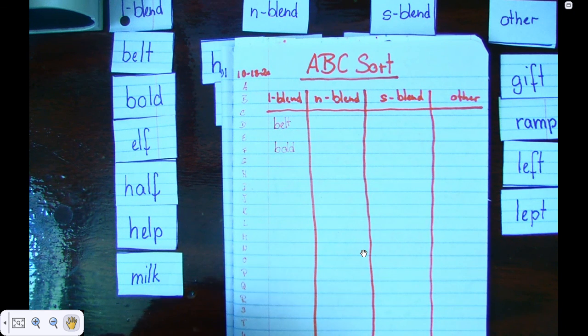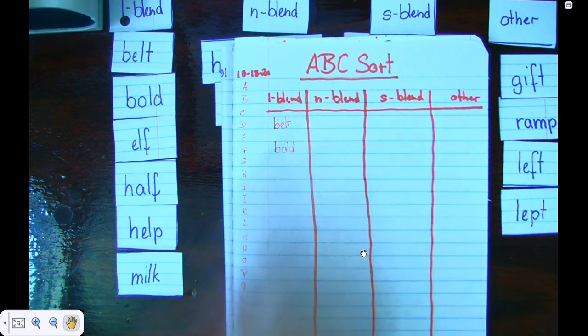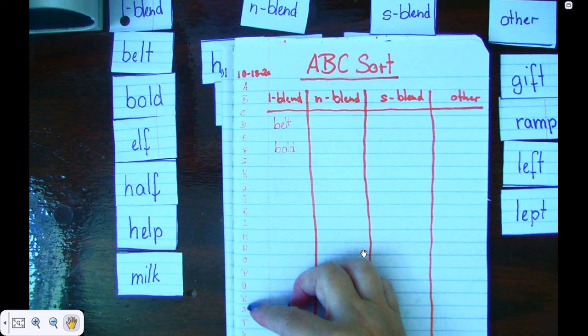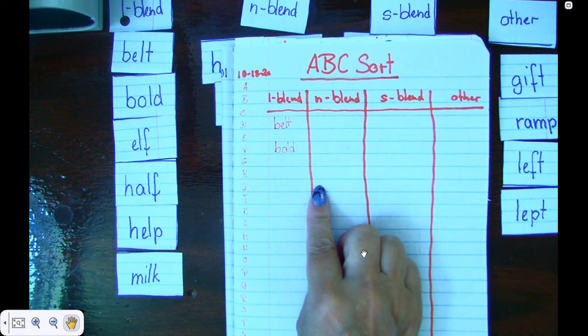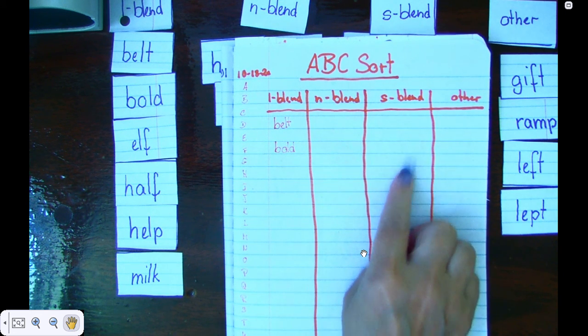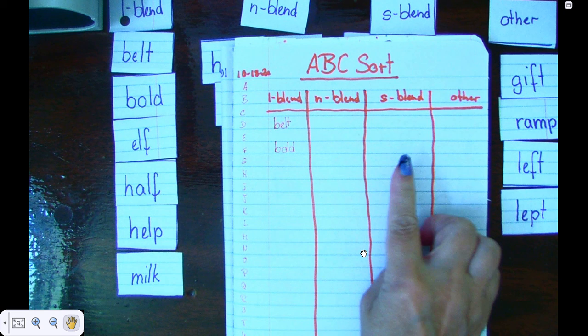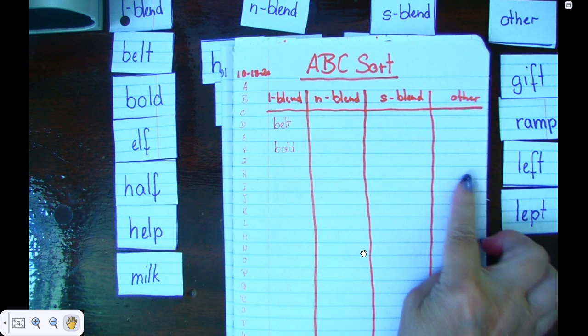All right, I need you to write the rest of these words down and then sort each category using your ABC line and write them down. Then sort with the ABCs, write them down, sort, write.